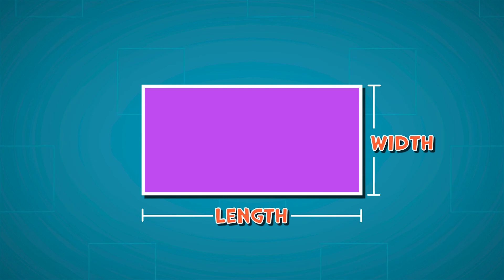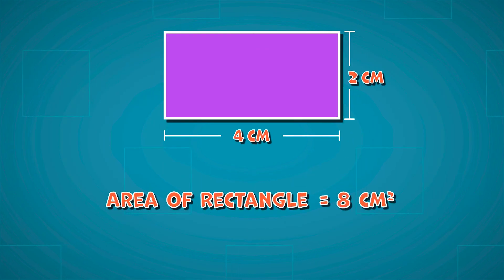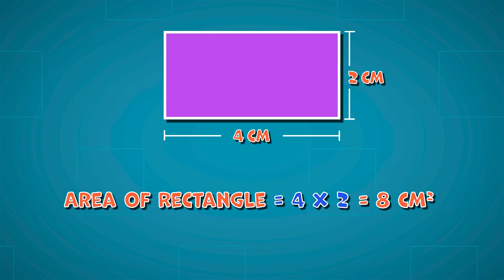The area of a rectangle is measured by multiplying the length by width. If the length of a rectangle is 4 centimeters and the width is 2 centimeters, then the area of the rectangle will be 8 centimeters squared, because 4 times 2 is equal to 8.